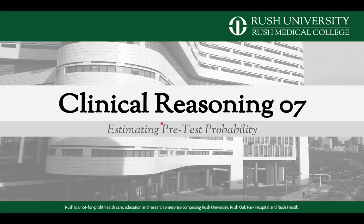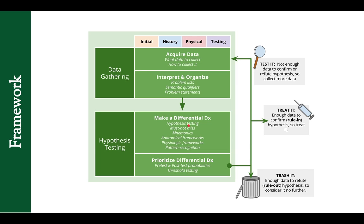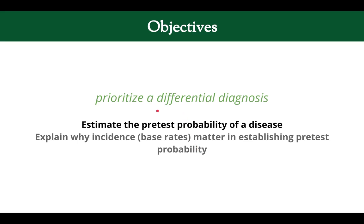Welcome to the seventh video in our clinical reasoning series. This one is on estimating pretest probability. Our objective is to estimate the pretest probability of a disease and explain why base rates matter.